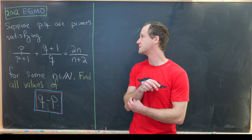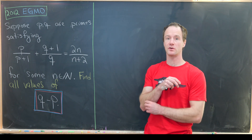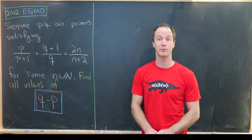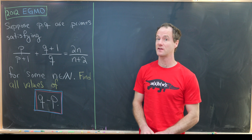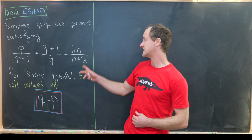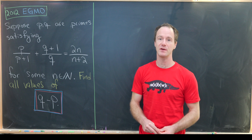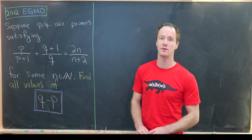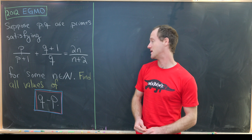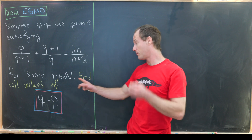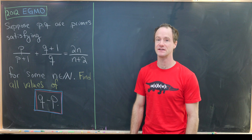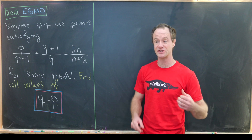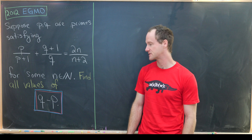Here we've got a nice number three problem from the 2012 European Girls Math Olympiad. We want to suppose that p and q are primes — notice they're not necessarily distinct — satisfying the equation p/(p+1) + (q+1)/q = 2n/(n+2) for some natural number n. Our goal is to find all possible values of q minus p. There's a really nice result that connects to a very famous conjecture in mathematics.